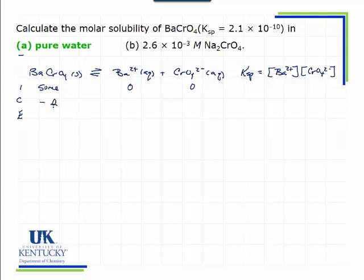Some of it will dissolve. I use an S there because that stands for molar solubility, how much of the barium chromate dissolves. For every one of those that dissolves, you will have one of these, and one of these.